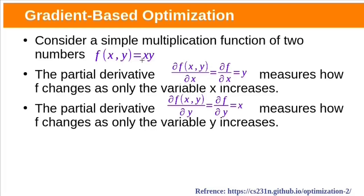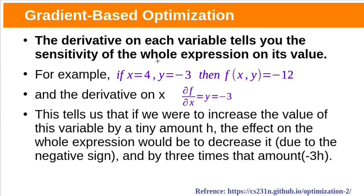Take a simple multiplication function with two variables: f(x, y) = xy. The partial derivative of f with respect to x is y. The derivative on each variable tells us the sensitivity of the whole expression to its value. For example, if x = 4 and y = −3, then f(x, y) = −12.